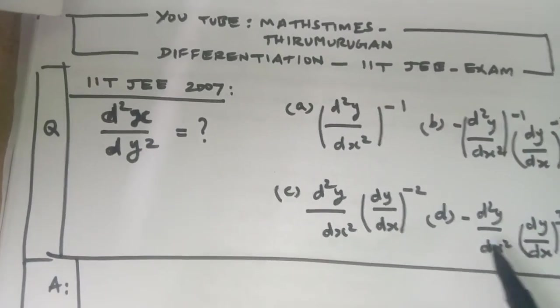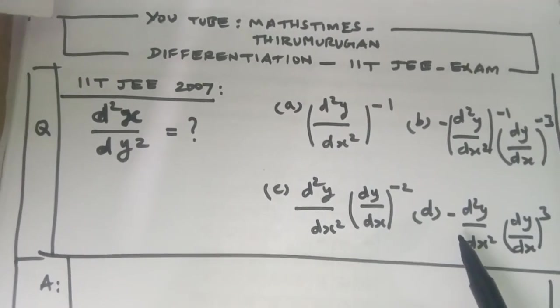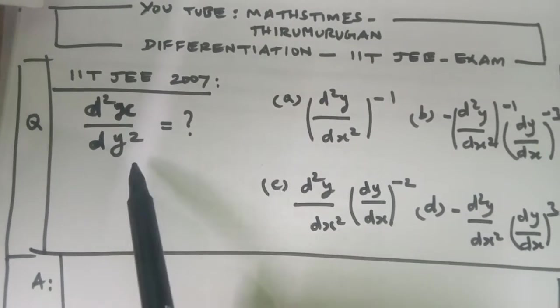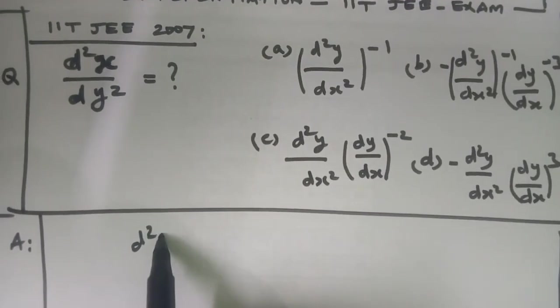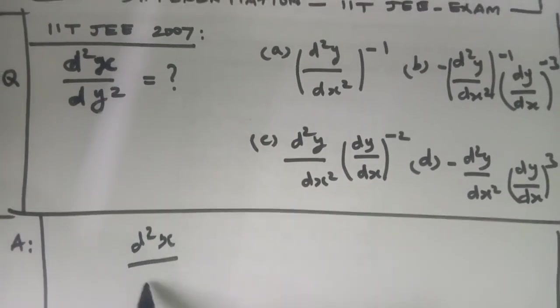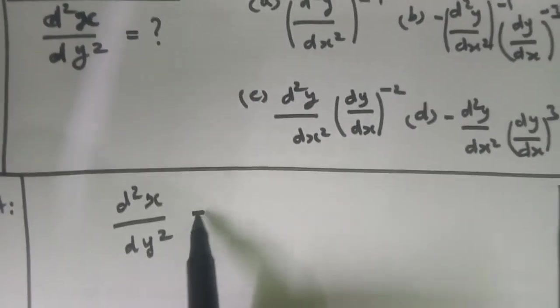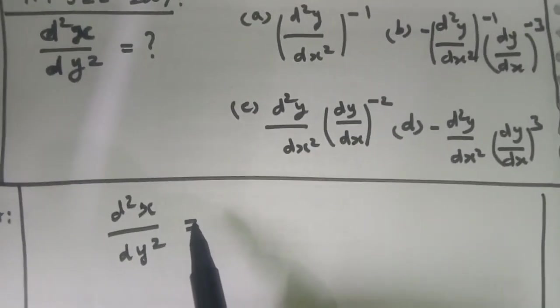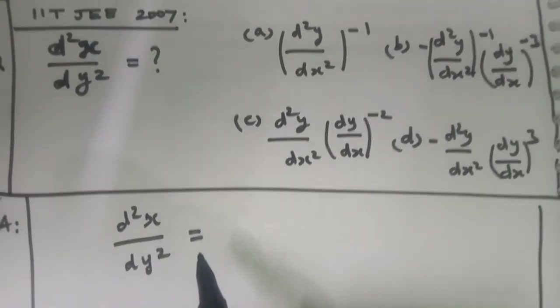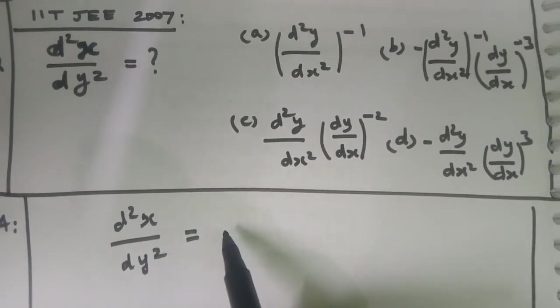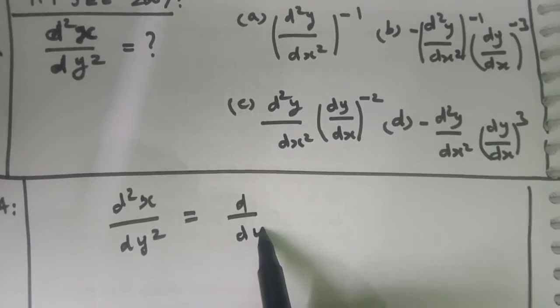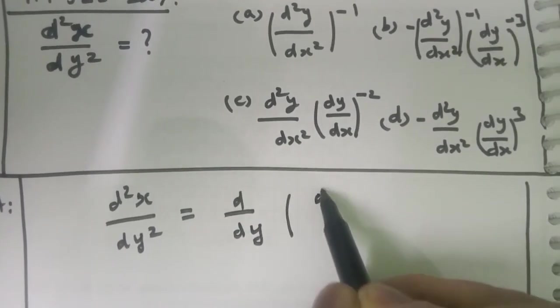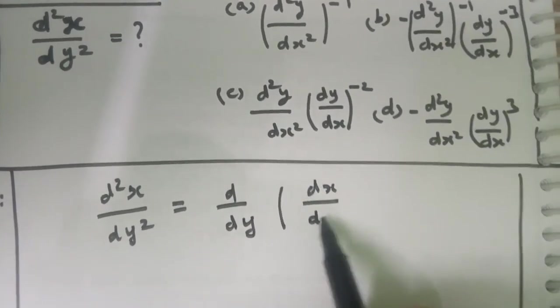We find out the correct option after solving the given question. First, we take what is given. The given is d²x/dy². By definition, we find the definition of d²x/dy². We write d/dy of dx/dy.